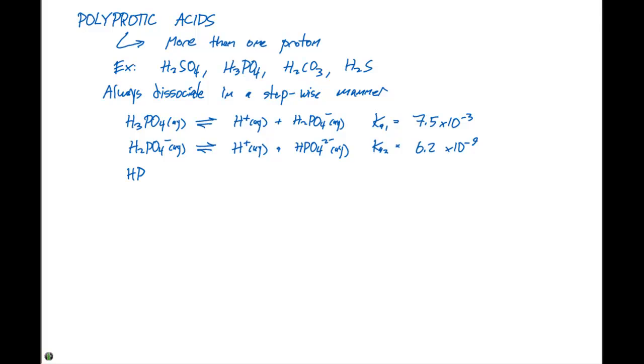If we have HPO4 two minus in equilibrium with losing the third proton, it's going to give us H plus plus PO4 three minus in aqueous solution. The Ka3 for this is going to equal 4.8 times 10 to the minus 11.